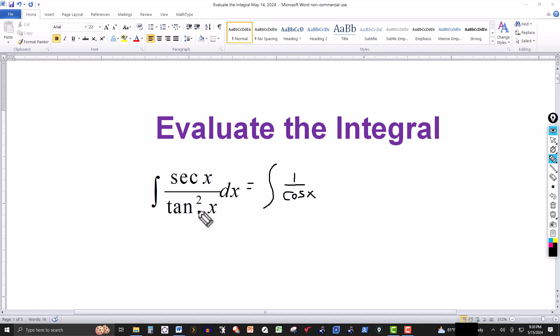Now tangent and cotangent are reciprocals. So tangent squared of x in the denominator would be the same thing as 1 over cotangent squared. Simplify that, this becomes cotangent squared of x, and that would be dx.